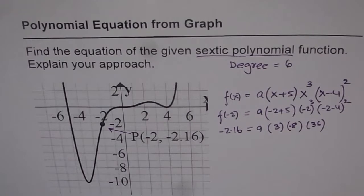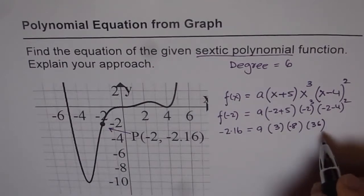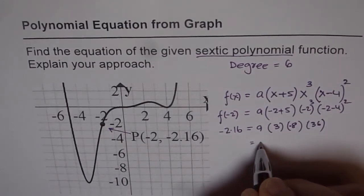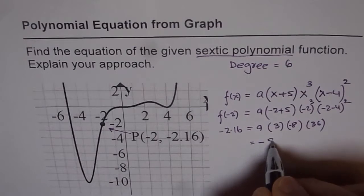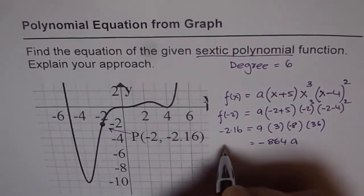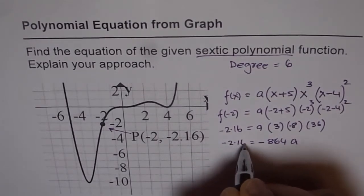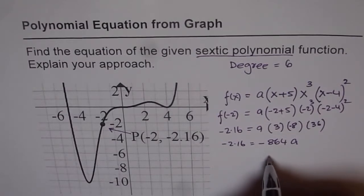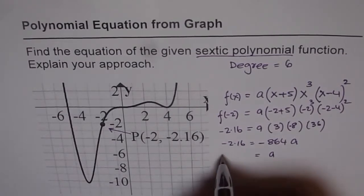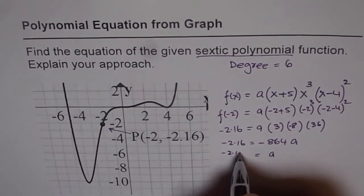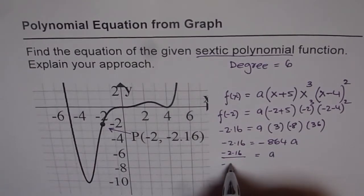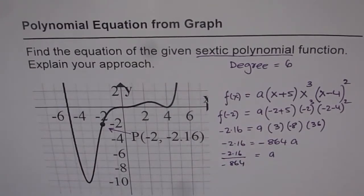So we get 3 times 8 is 24 times 36 is equal to 864 with a minus sign. So we get minus 864 a equals to minus 2.16. Now to get the value of a we just need to divide minus 2.16 by minus 864. So let us do that.